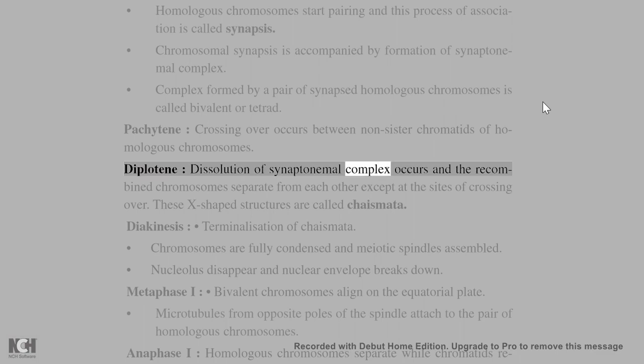Diplotene: Dissolution of synaptonemal complex occurs and the recombined chromosomes separate from each other except at the sites of crossing over. These X-shaped structures are called chiasmata.